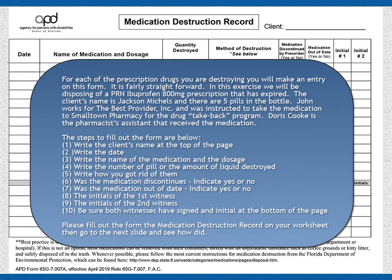For each of the prescription drugs you are destroying, you will make an entry on this form. It's fairly straightforward. In this exercise, we will be disposing of a PRN Ibuprofen 800 mg prescription that has expired. The client's name is Jackson Michaels and there are five pills in the bottle. John works for Best Provider Incorporated and was instructed to take the medication to Small Town Pharmacy for the Drug Take Back Program. Doris Cook is the pharmacist's assistant that received the medication.